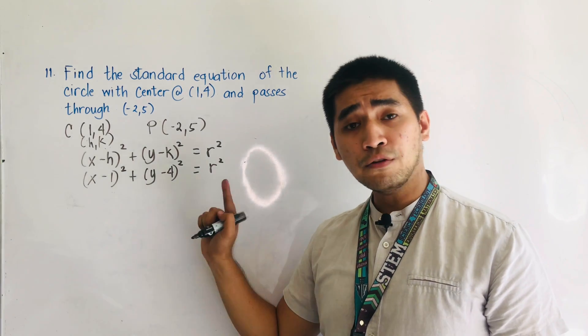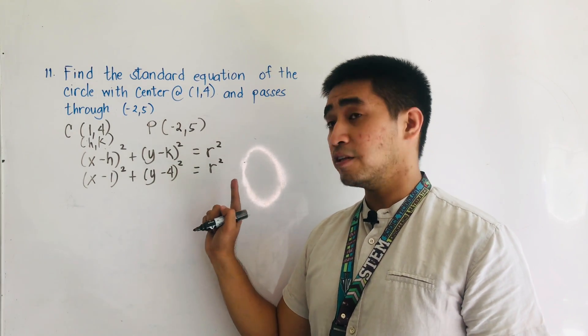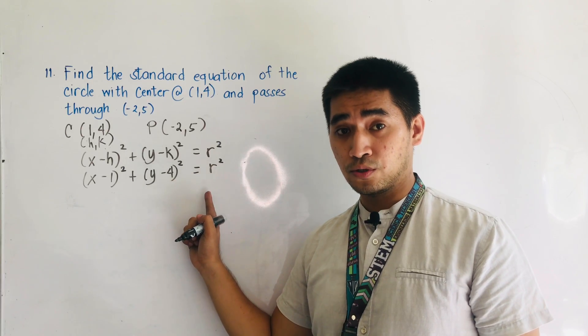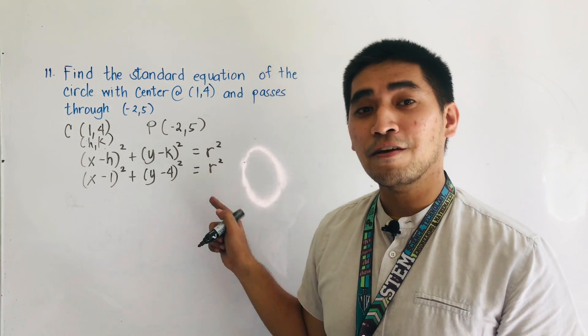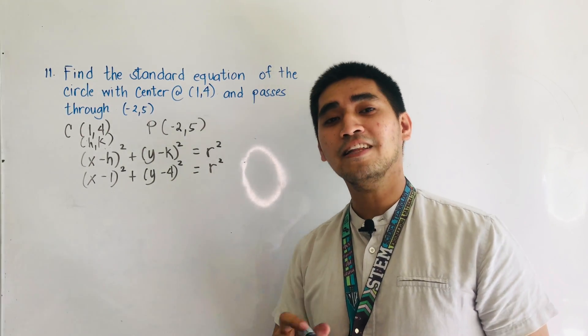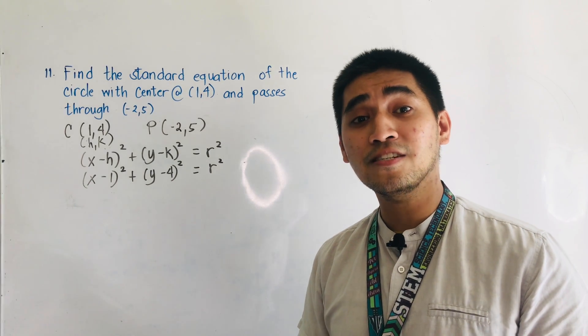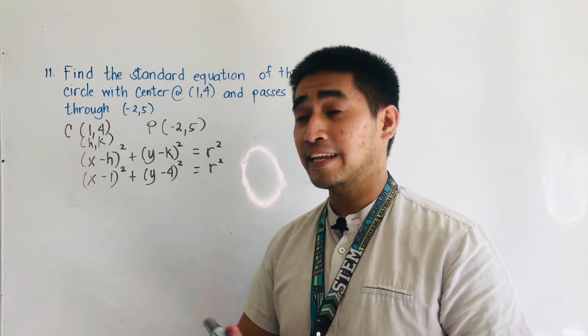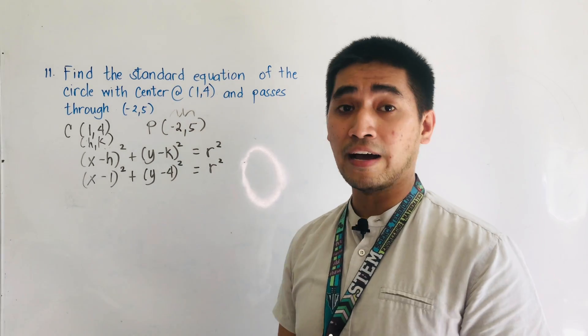We could find out that we could not yet determine the value of the radius. But we are given the second condition, and the second condition is that it passes through another point. And that point is negative 2 and positive 5.